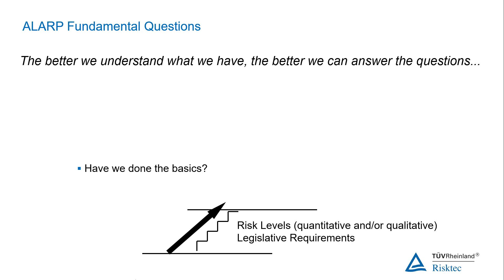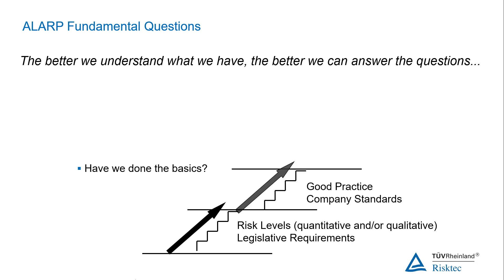The next hurdle that we would then have to cross could be referred to in shorthand as industry standards. Do we have the controls in place that either our own company standards have mandated, or that are regarded as good practice within our industry? If there's a common set of standards in place — such as might be set by an industry guidance body or international standards — then at the very least we should be seriously questioning ourselves as to why we do not have them in place for our operation. What would our defence be in a court of law as to why these standards, controls, measures, etc. were not in place? That said, no set of such standards could ever hope to cover all possible situations, and so there will undoubtedly be times where we might need to deviate — but we'd better have a very good reason for doing so, and we should also make sure that the justification for any such deviation is recorded.